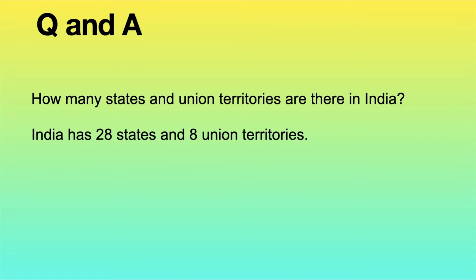How many states and union territories are there in India? India has 28 states and 8 union territories.